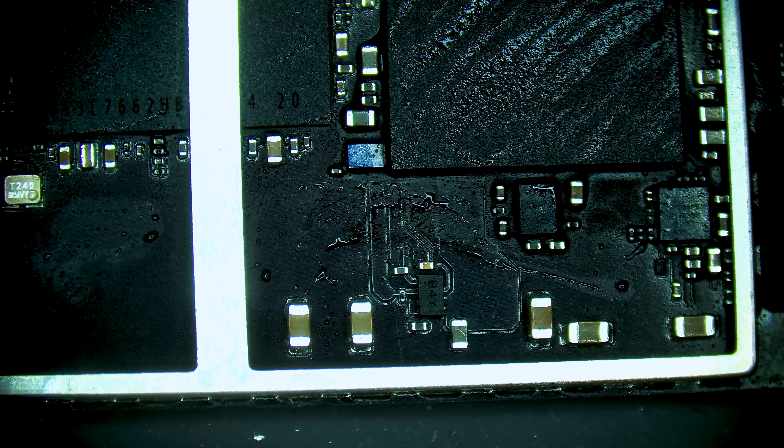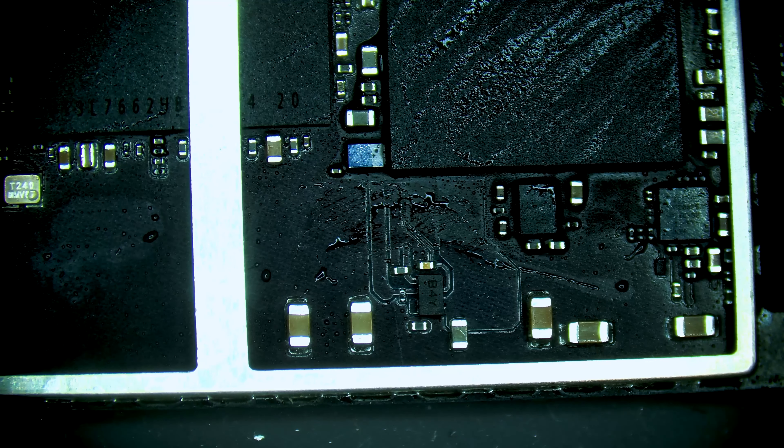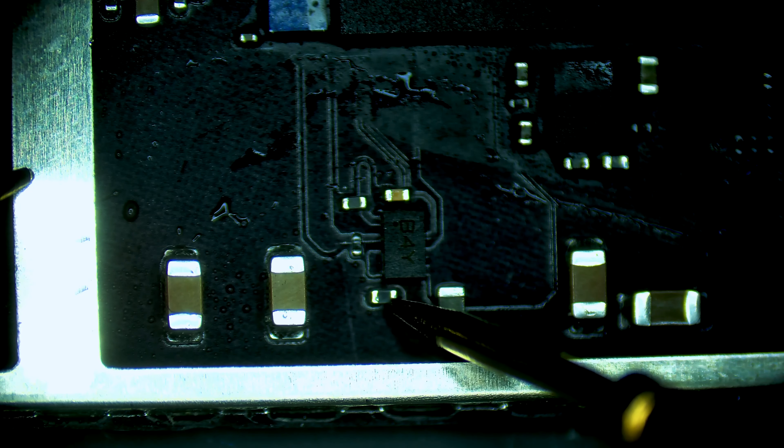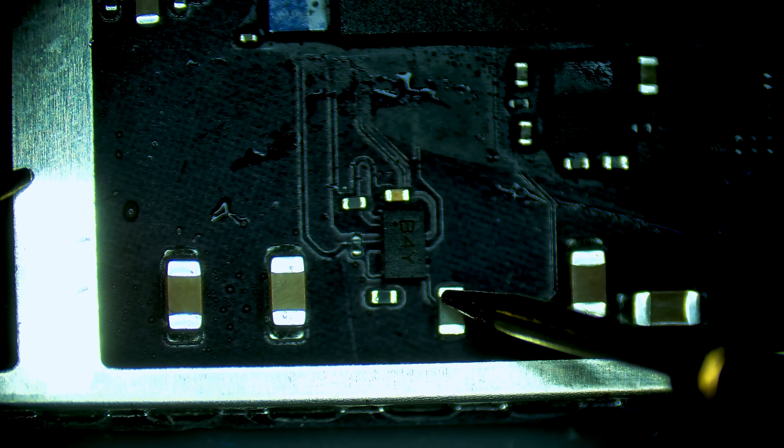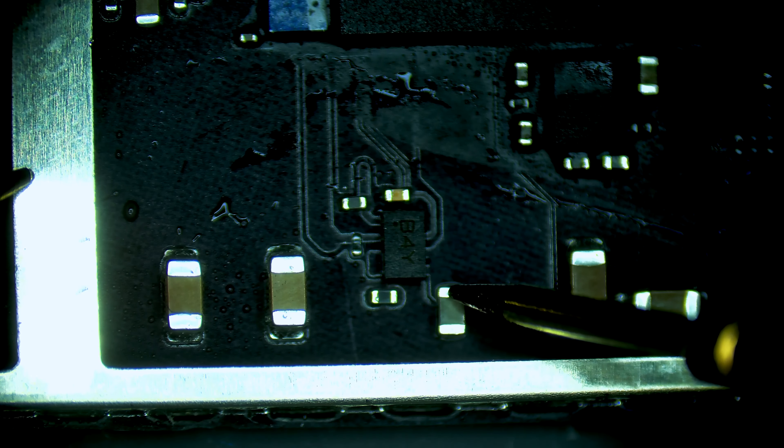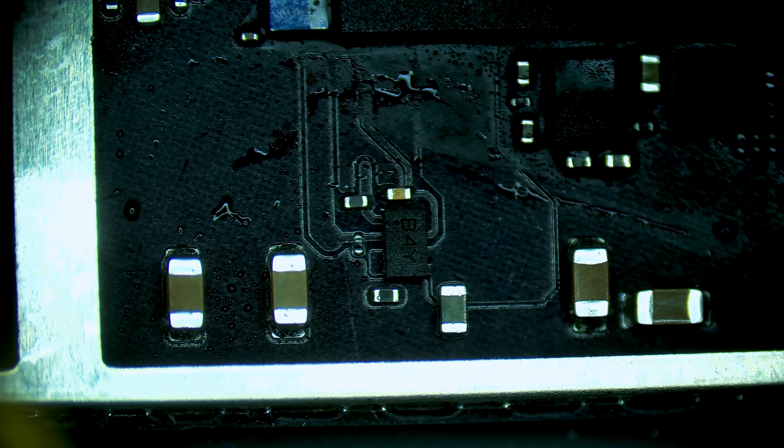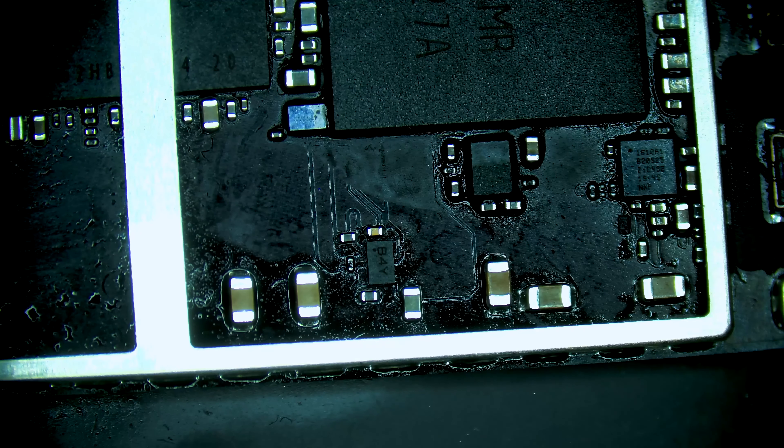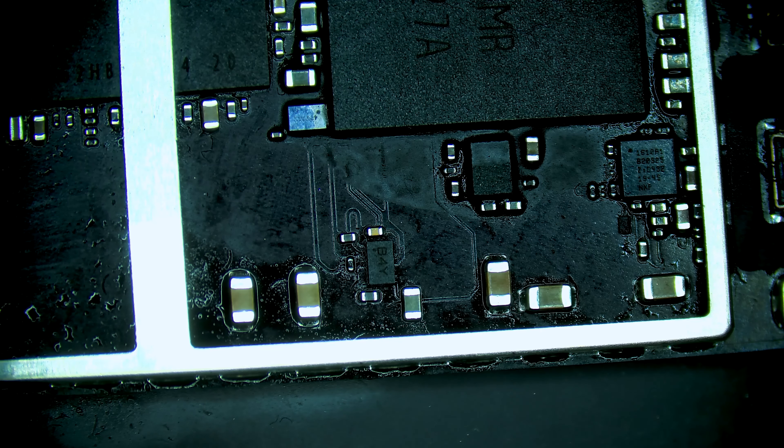Let's measure around this component and see exactly which line is short. No short, no short there. Full short here. So we are short on PP3V3SW. Alright, let's start by eliminating the variable U8350. Let's grab our hot air station.